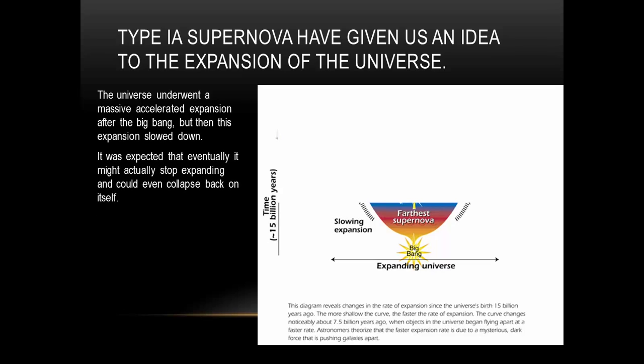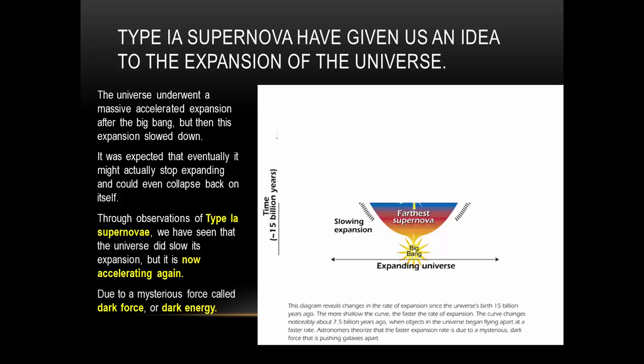It was expected that eventually it might actually stop expanding and could even collapse back on itself. By looking at observations of type 1a supernova, we have seen that the universe did actually slow its expansion, but now it started to accelerate its expansion again. And this is due to a mysterious force called the dark force, or dark energy.